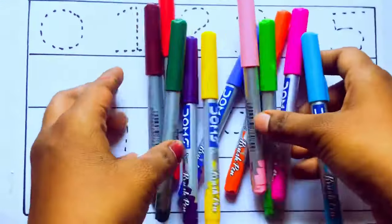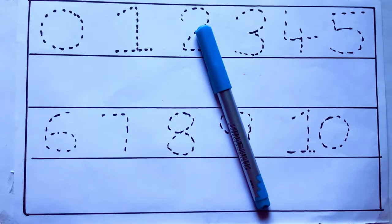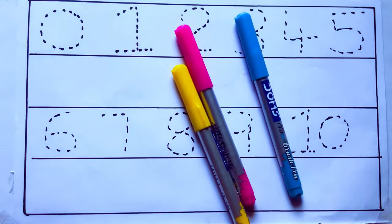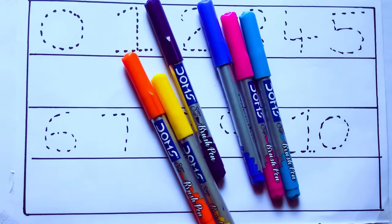Let's learn some colors. These are all the color pencils. Let's learn the names. Sky blue color, pink color, yellow color, orange color, violet color, blue color.